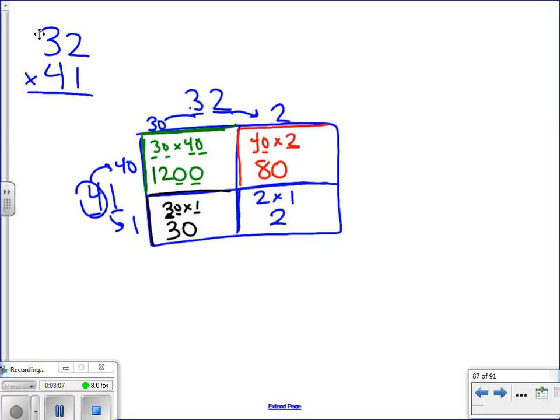And following the normal pattern that we have with area model, we are finding the area of the whole entire object. In order to find the area of the whole entire object, we need to add all of our answers together. 1,200 plus 80 plus 30 plus 2.